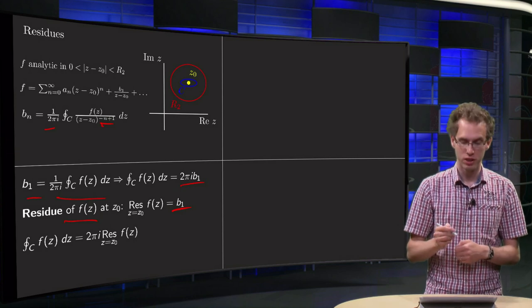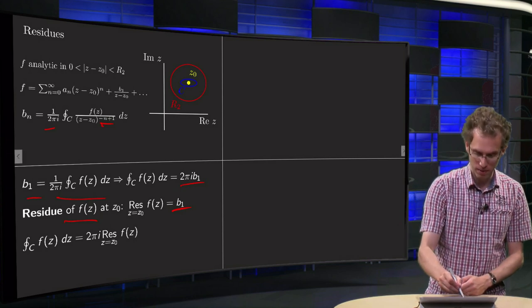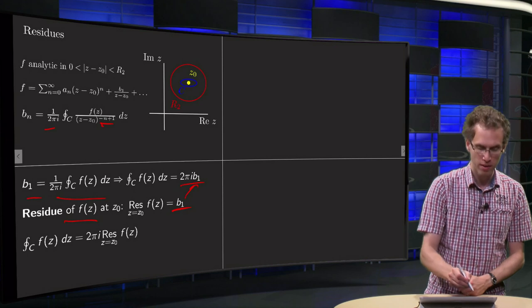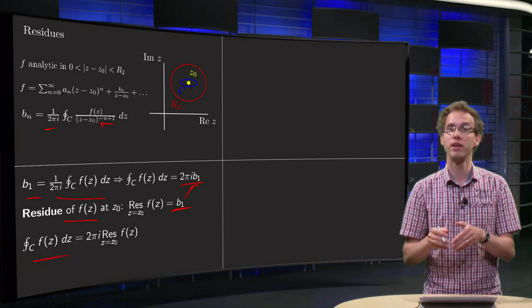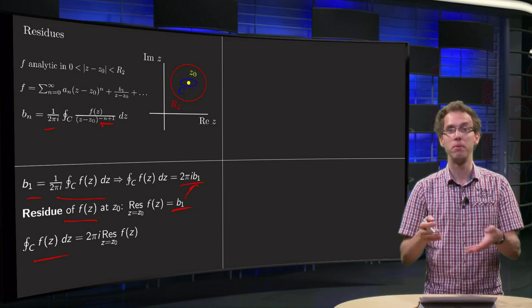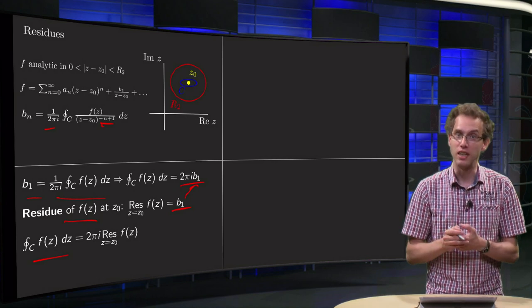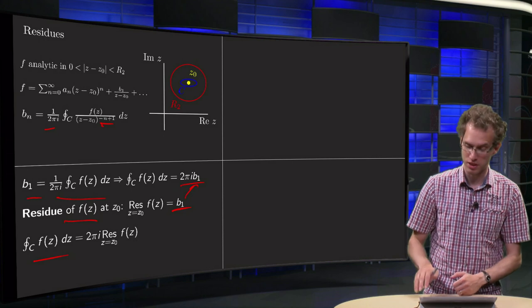And using this notation, we can plug in this formula over here. We get the integral along C of f(z) dz equals 2πi times b₁, and b₁ has got its own name, equals 2πi times the residue of f(z) at z equals z₀.